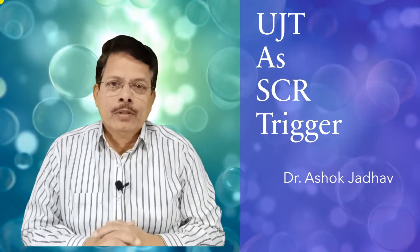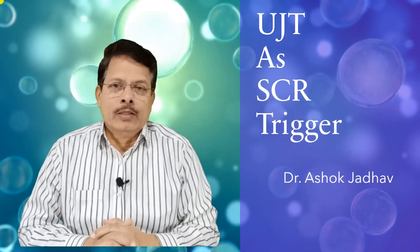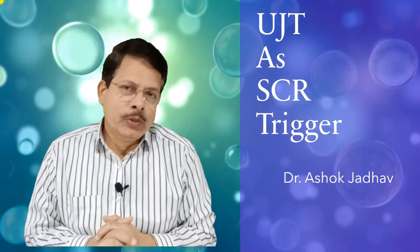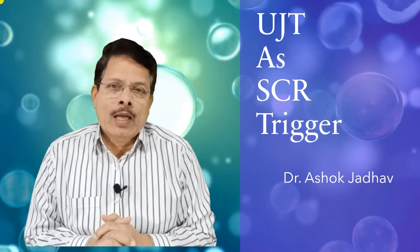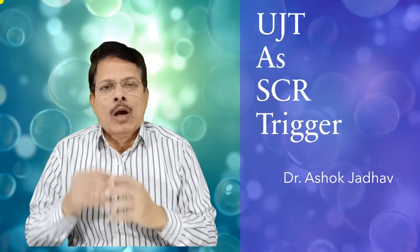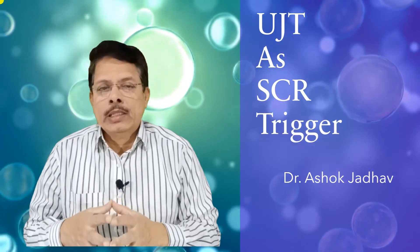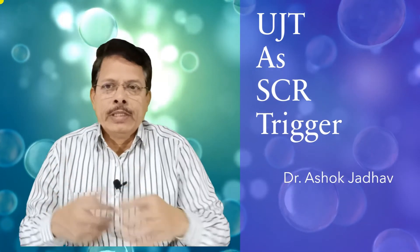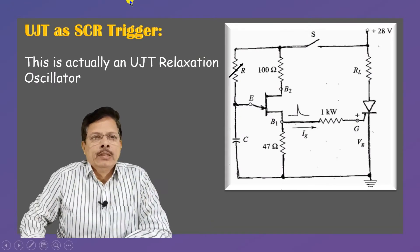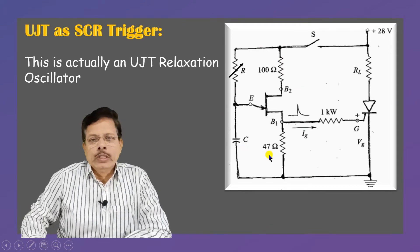Welcome to the YouTube channel Passion Drawings. Today we will study UJT as an SCR trigger — that means we are going to study how a unijunction transistor can be used as a triggering device for an SCR. Let us look at one circuit: what you see is actually a UJT sawtooth oscillator, or relaxation oscillator.